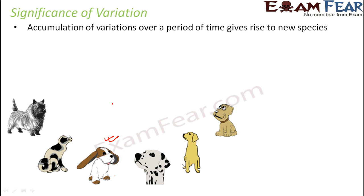Here we are talking about different varieties of dog, but different organisms also get produced due to variations. For example, if you look at a cat and a tiger, they are not the same, but they share a lot of similarity, which shows that they evolved from each other. Due to some variations gradually accumulating, they became two different species altogether.